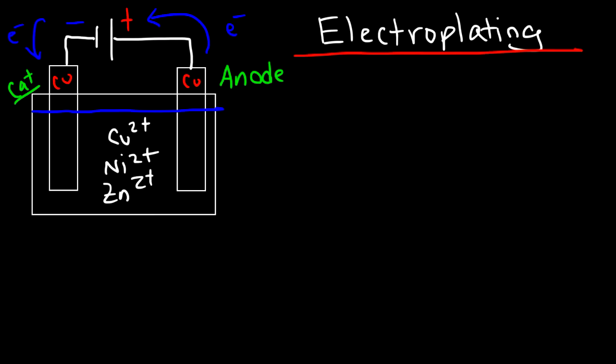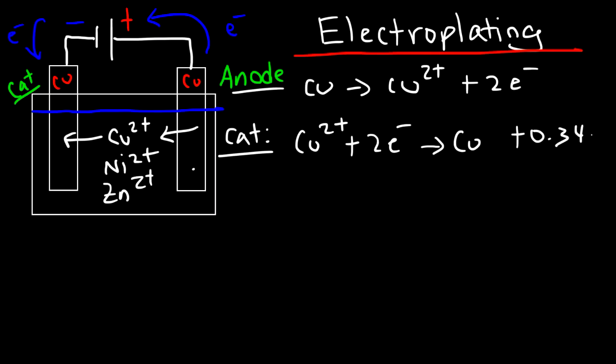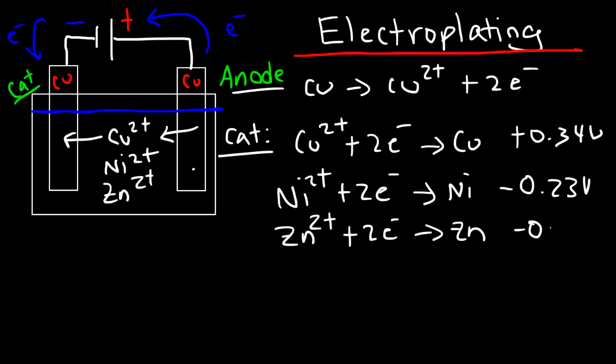So oxidation occurs at the anode. At the anode copper metal will be oxidized and so the copper two plus ions will enter the solution. Now what about at the cathode? At the cathode copper can be reduced, and so this is the reduction reaction for copper. The cell potential is positive 0.34. Now cations like this one flow towards the cathode, so all of these cations will accelerate towards the cathode. Now here's the reduction potential for nickel - it's negative 0.23 volts - and the reduction potential for zinc is negative 0.76 volts.